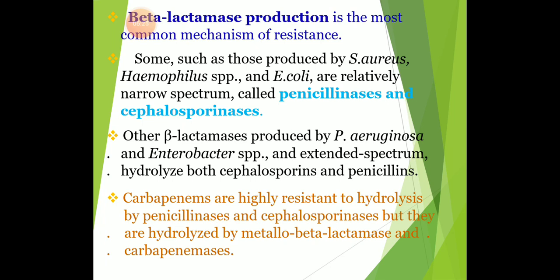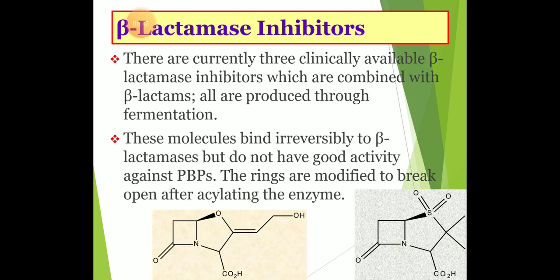So all of them are susceptible to some kind of enzyme synthesized by Pseudomonas aeruginosa. Beta-lactamase inhibitors currently available in clinical forms include avibactam, which is combined with beta-lactam antibiotics and produced through fermentation. These molecules bind irreversibly to beta-lactamase but do not have good activity against penicillin-binding proteins. The rings are modified to break open after acylating the enzyme.